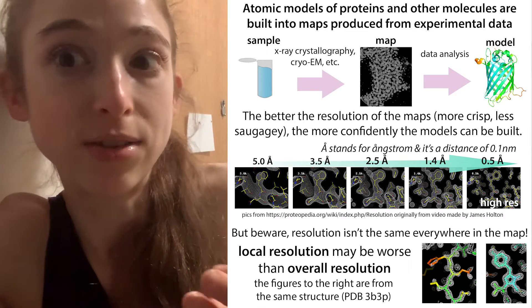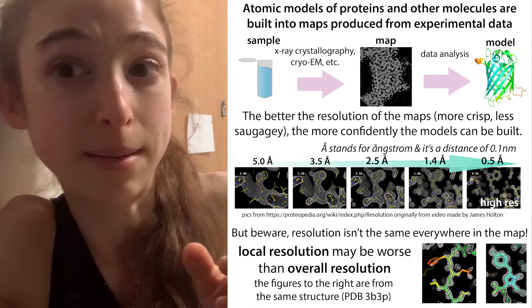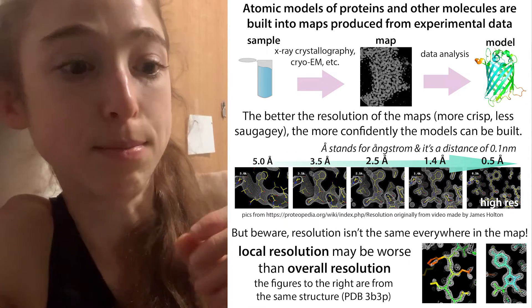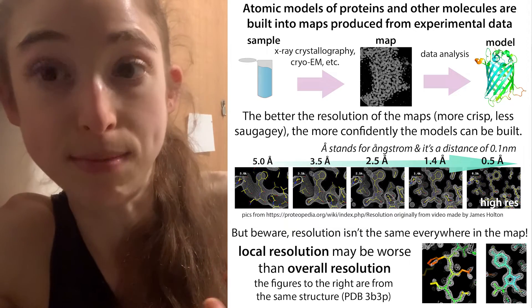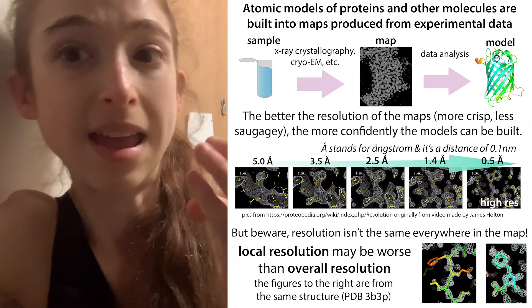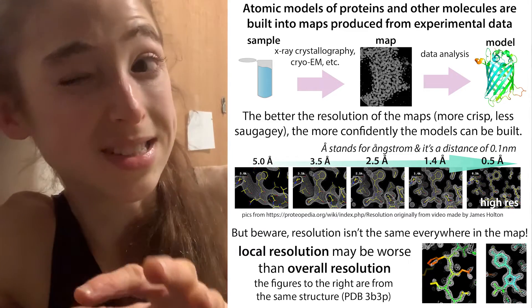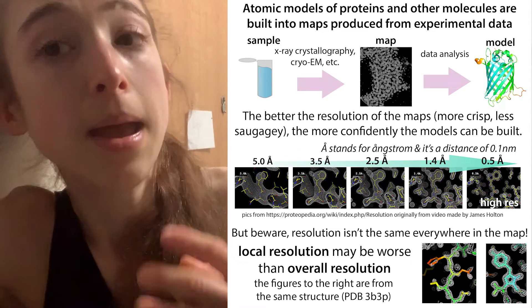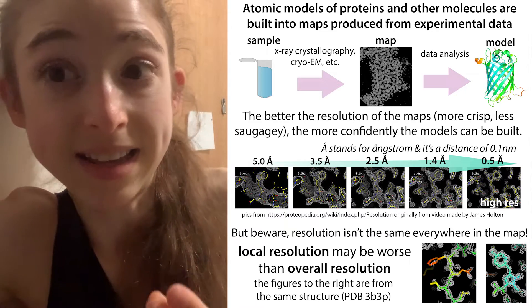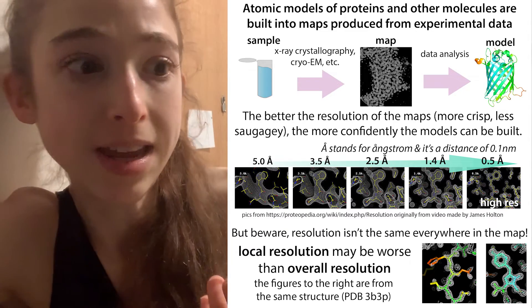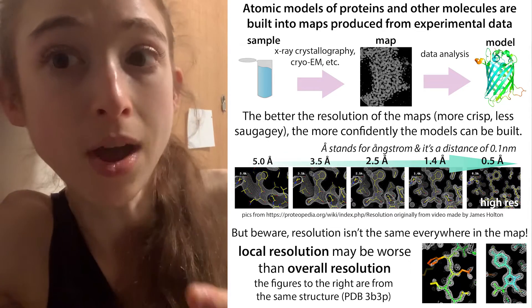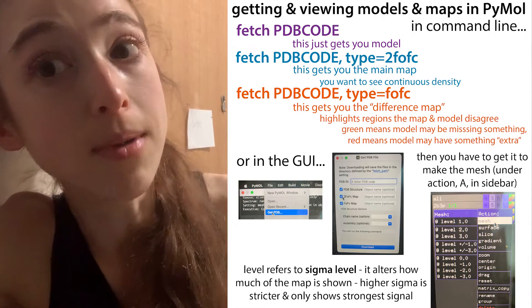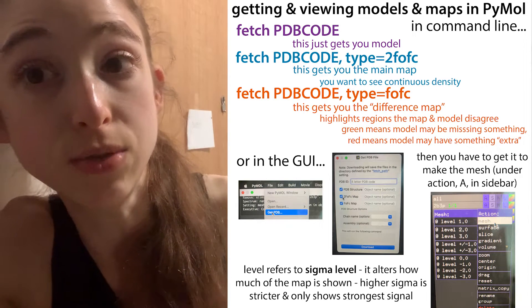They get this sausage-looking thing called the map — it'll be different kinds of maps for different experiments — and their job is to model in the atomic positions into that sausage-shaped map. Some places of the map have lower local resolution and look more sausage-like, while others are more crisp, making it easier to fit in the model. The model is going to be better supported by the data in some places than others, and if you really care about a region of a protein, you want to look at the maps behind the model. Today I want to show you how to look at both the model and the maps in PyMOL, a software you can use to view these structures.